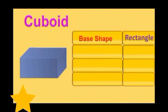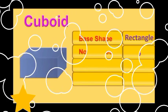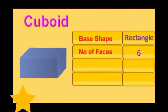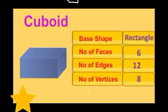Cuboid. Base shape: rectangle. Number of faces: 6. Number of edges: 12. Number of vertices: 8.